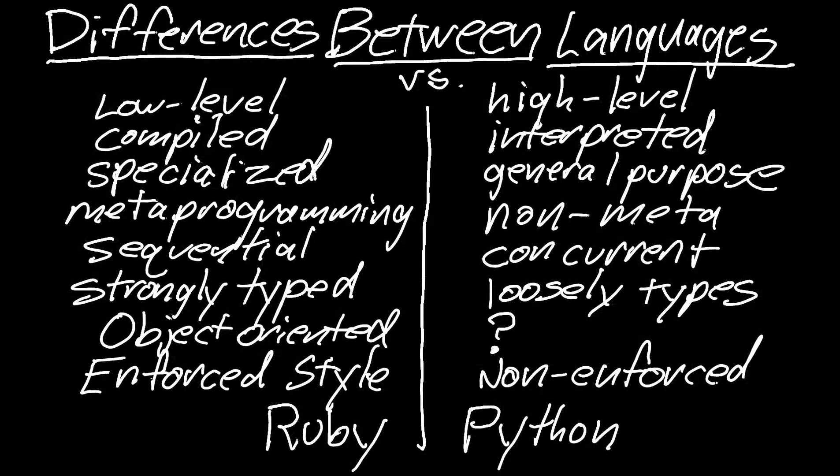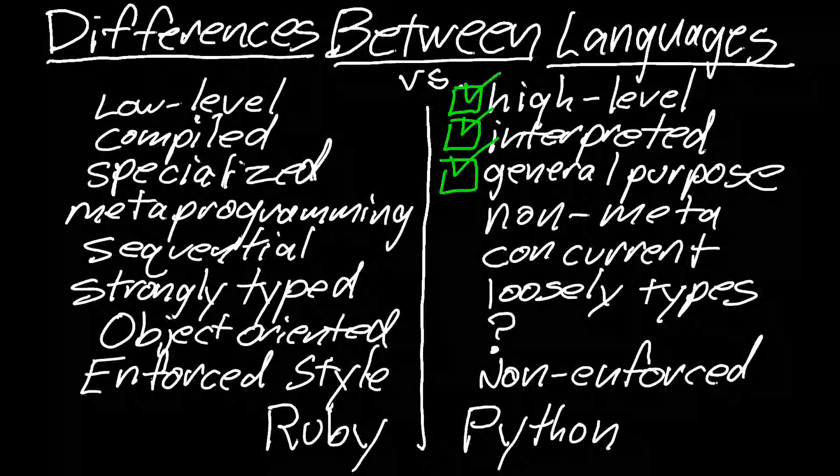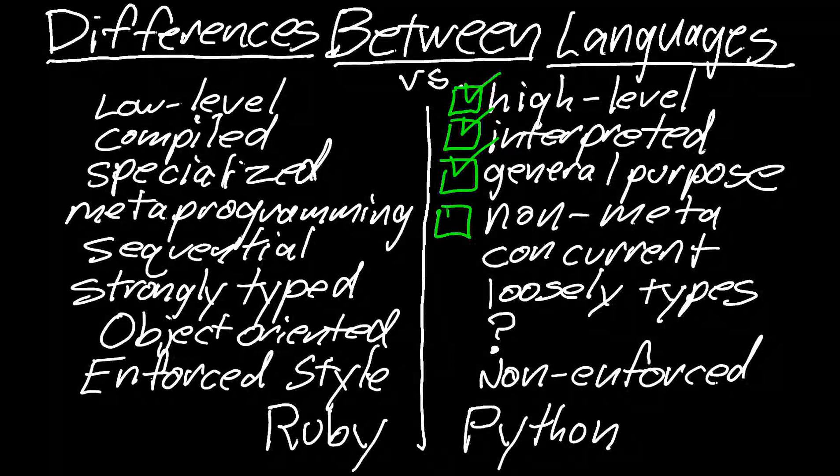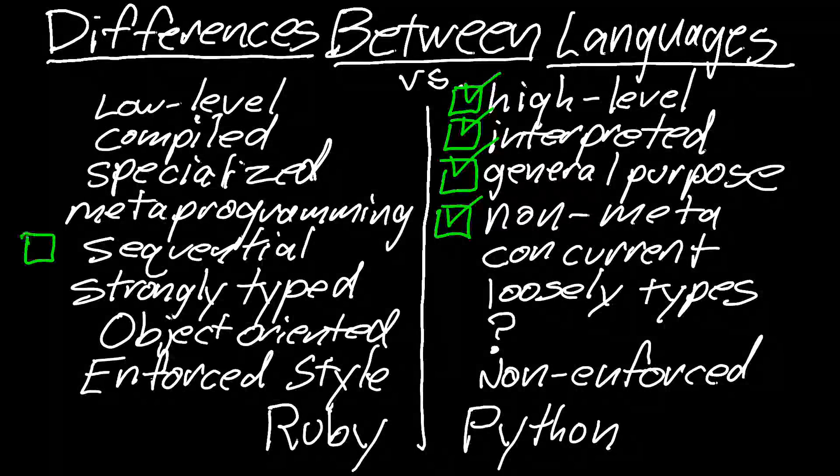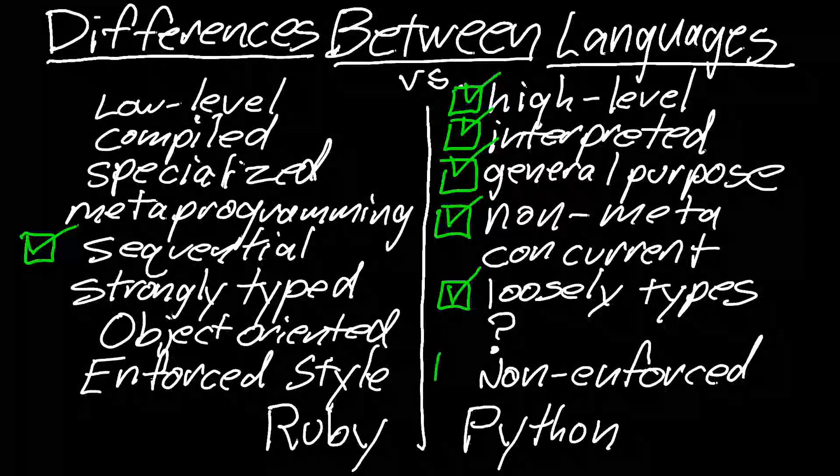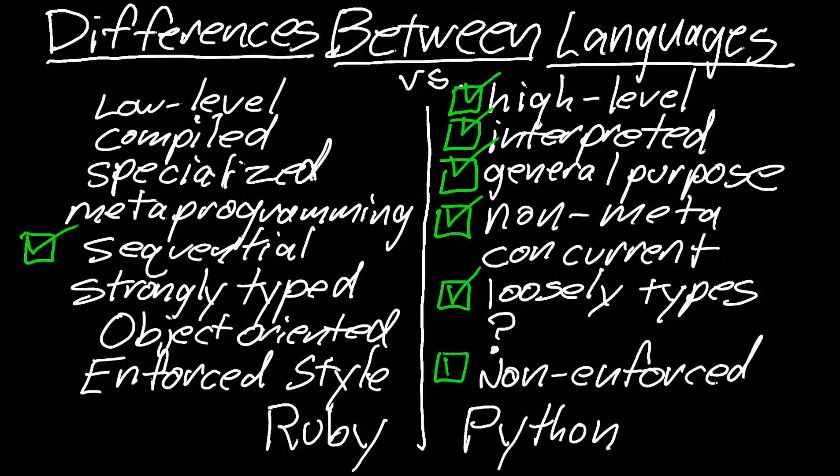high level, interpreted, general purpose, non-meta even though Python has a certain amount of meta programming capabilities in it, sequential even though I hope that'll change someday and that the global lock gets removed from Python, loosely typed, and non-enforced programming style. Python.